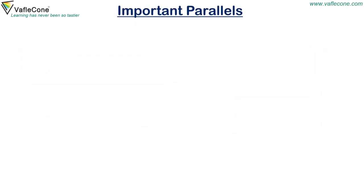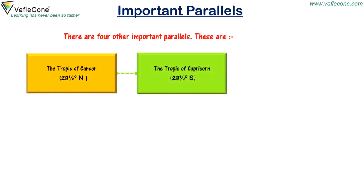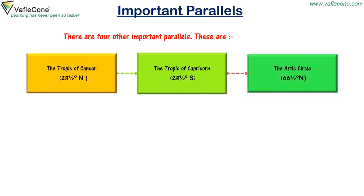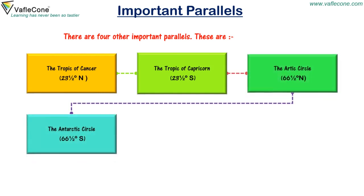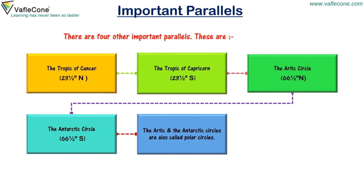Important parallels. There are four other important parallels: the Tropic of Cancer at 23 and a half degrees N, the Tropic of Capricorn at 23 and a half degrees S, the Arctic Circle at 66 and a half degrees N, and the Antarctic Circle at 66 and a half degrees S. The Arctic and the Antarctic Circles are also called Polar Circles.